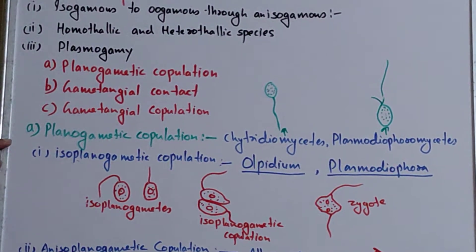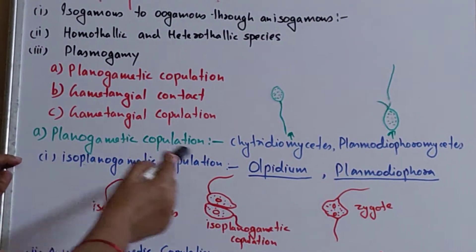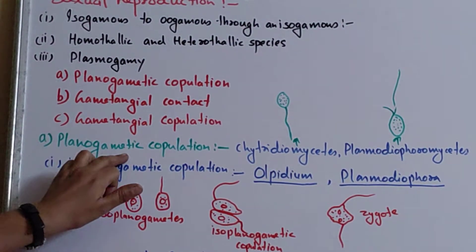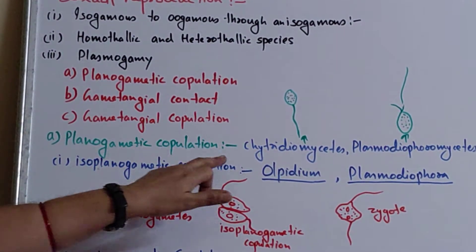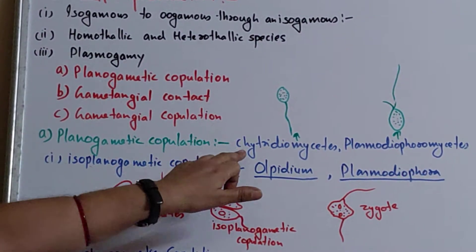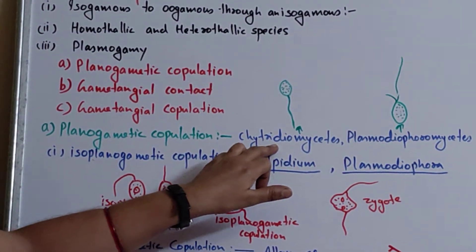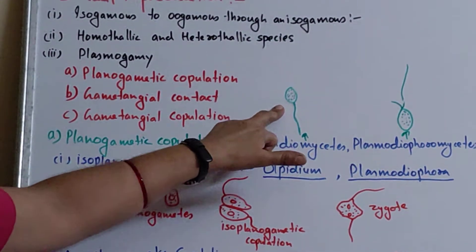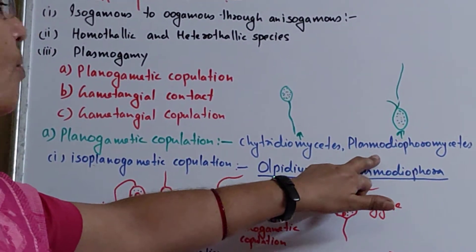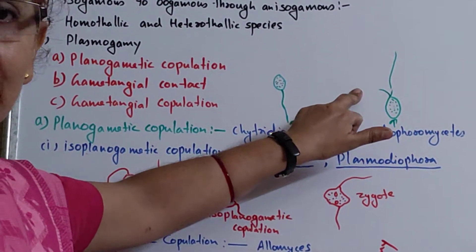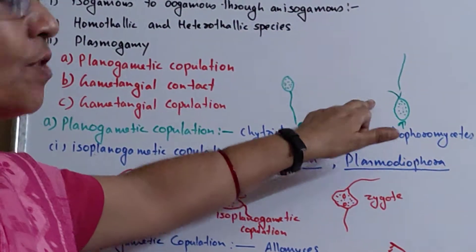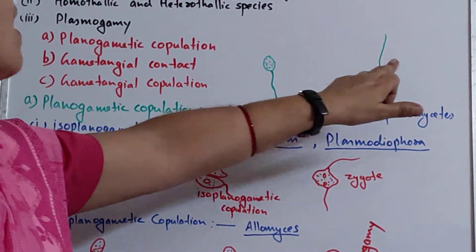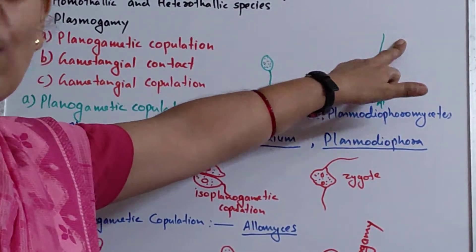The first method is planogametic copulation, which occurs in members of Chytridiomycetes and Plasmodiophoromycetes. Planogametes means motile gametes. In Chytridiomycetes, the motile gametes are posteriorly flagellated, and the type of flagella is whiplash. In Plasmodiophoromycetes, the motile gametes are biflagellated with flagella of whiplash type. One flagellum is smaller and another is larger; the smaller one has a blunt tip while the larger one has a sharp pointed tip.